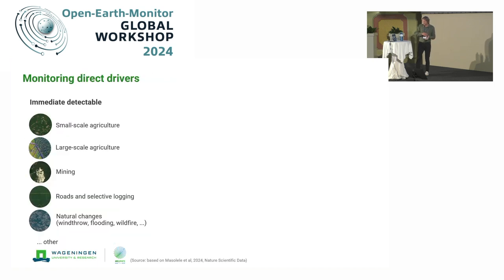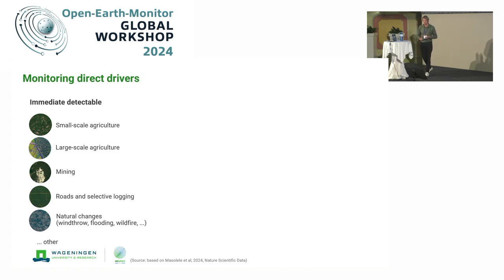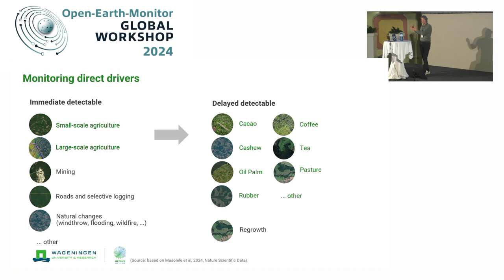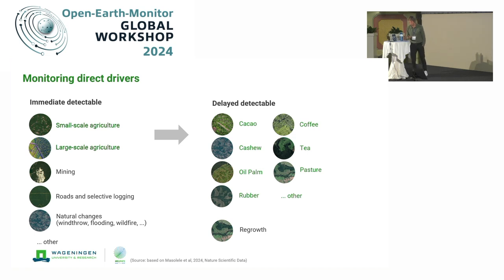There is a set of drivers we can immediately detect in near real-time — for example, small agriculture, mining, roads, selective logging, and some natural causes like meandering rivers. But for commodities in particular, we will not immediately be able to label the driver, because it takes some time after the forest is cut before crops are planted and grow enough that we can identify them from space.